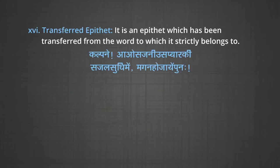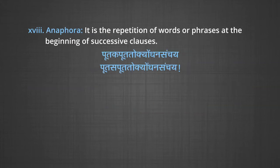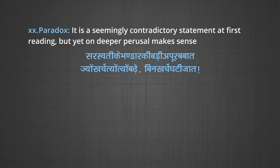Then we go on to transferred epithet — it is an epithet which has been transferred from the word to which it strictly belongs. Antithesis — it is the use of words with opposite meaning in the same line. Anaphora — it is the repetition of words or phrases at the beginning of successive clauses. Phrase — a phrase is usually a group of words with some special idiomatic meaning or other significance. Then we go on to paradox — it is a seemingly contradictory statement at first reading but yet on deepest perusal makes sense. For example: 'Saraswati ke bhandar ki badi apoorva baat, jo kharchey tyon tyon badhe, bin kharchey ghat jaat.'